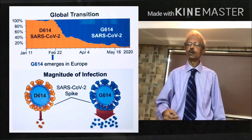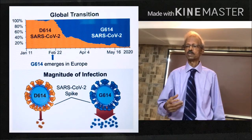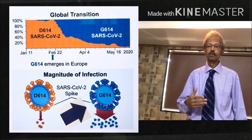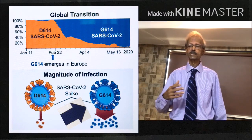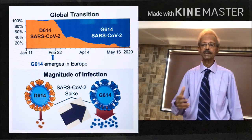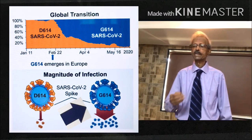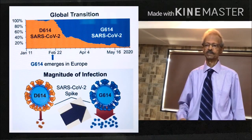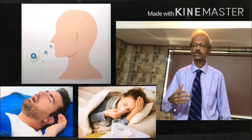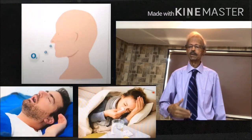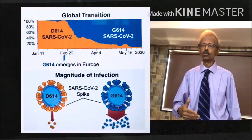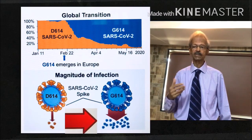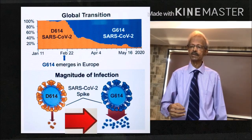A virus that kills its host rapidly does not go far and gets destroyed with the dead body of the host. However, a surviving virus tends to mutate into a form like G614, which is less lethal comparatively but more transmissible, and will spread from one host to another rapidly, infecting large numbers of the population. From the figure on the left hand side, you will realize that G614 is more transmissible than the earlier version D614.